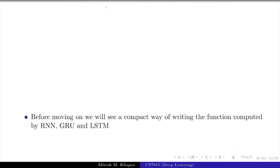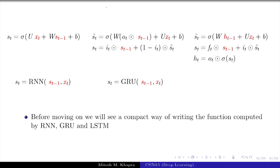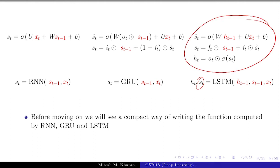Before moving on, we will use compact notation for RNN, GRU and LSTM. An RNN is defined as S_t = RNN(S_{t-1}, x_t). A GRU is written as S_t = GRU(S_{t-1}, x_t). For LSTM the output is both H_t and S_t, so we write LSTM(S_{t-1}, x_{t-1}) giving back both H_t and S_t. Instead of writing all the parameters and sigmoid equations each time, we just use this compact notation.